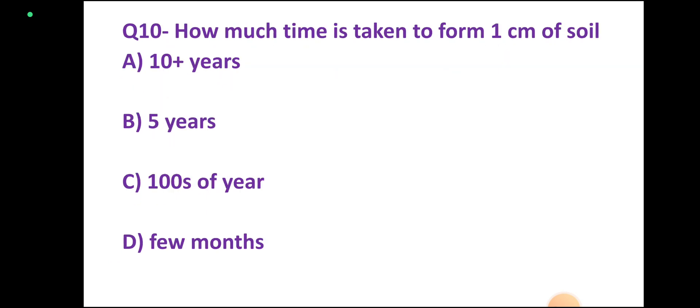Question number 10: How much time is taken to form 1 cm of soil? Options: about 10 years, 5 years, hundreds of years, few months. Correct answer: option C, hundreds of years.